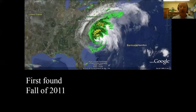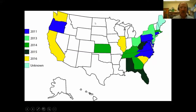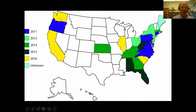Boxwood blight was first found in North America in fall 2011, including in Oregon and East Coast states. Hurricane Sandy in 2012 moved through the area where it was first found. By 2013 it appeared in New York and Ohio; by 2014 in Georgia; by 2015 and 2016 it had spread to Illinois, South Carolina, Washington state, and California. The Pacific Northwest occurrence was not surprising given that British Columbia nurseries were also affected in 2011.